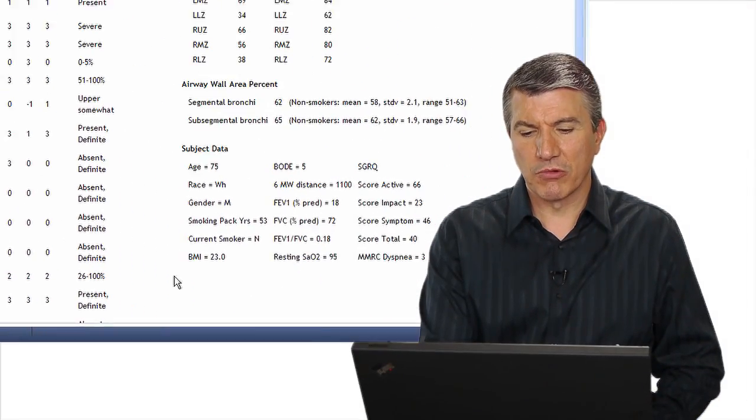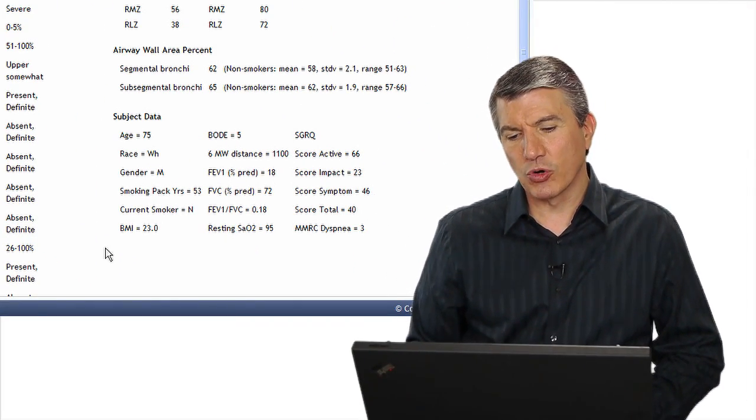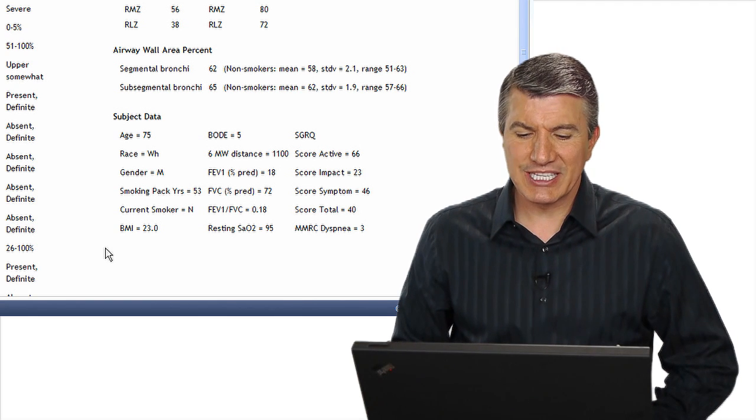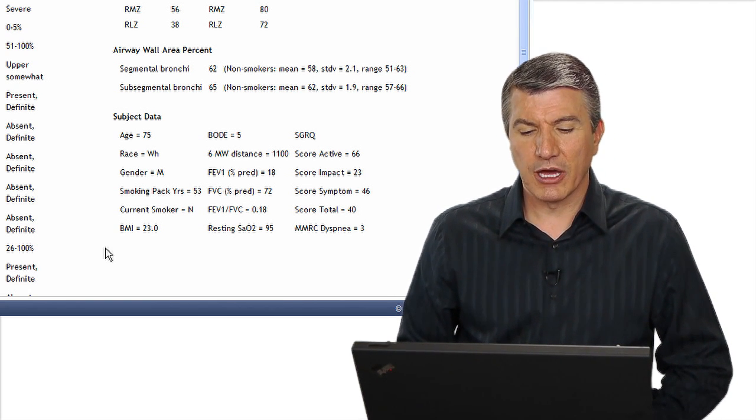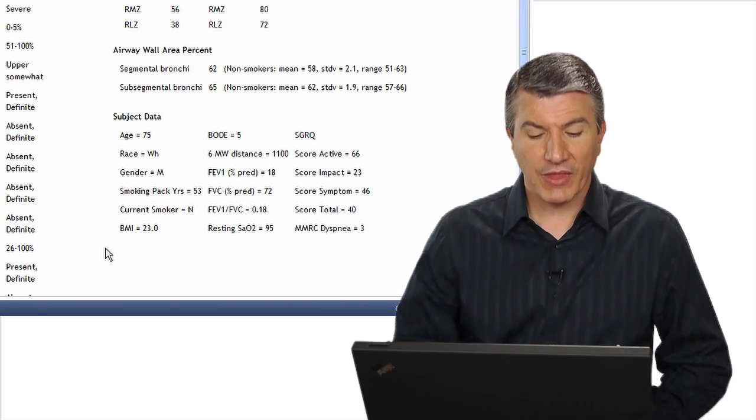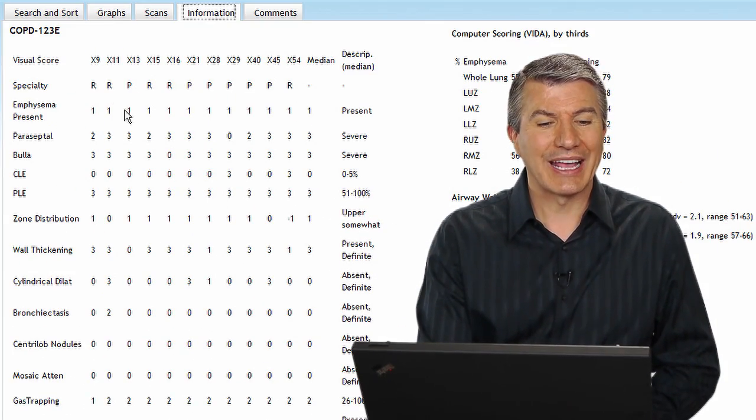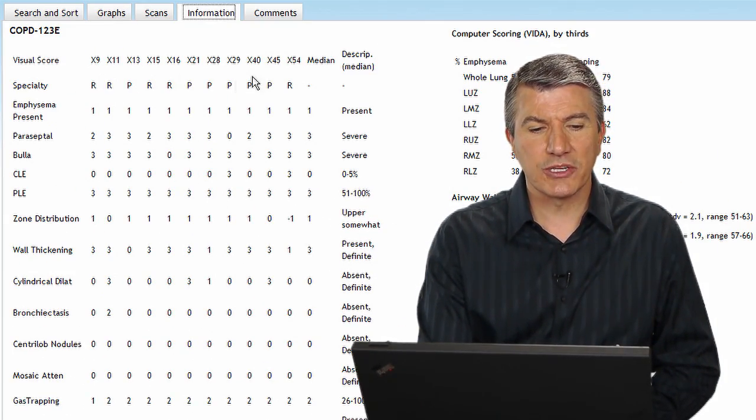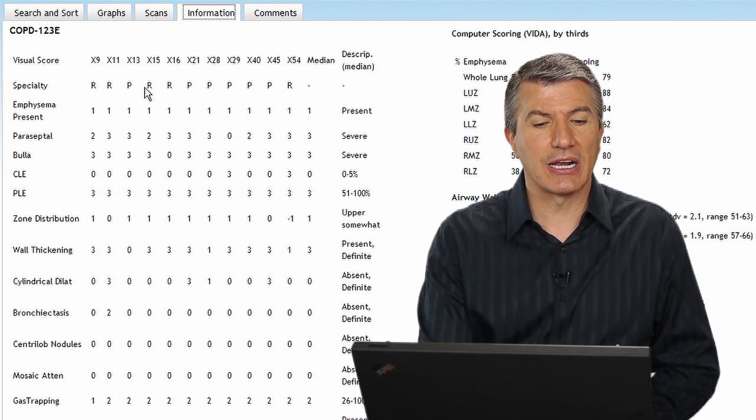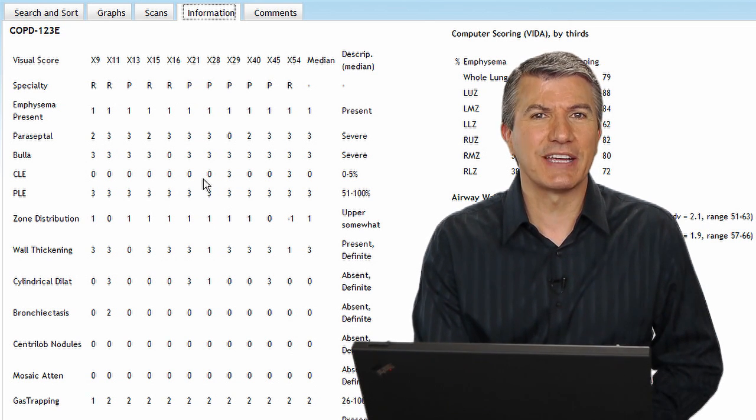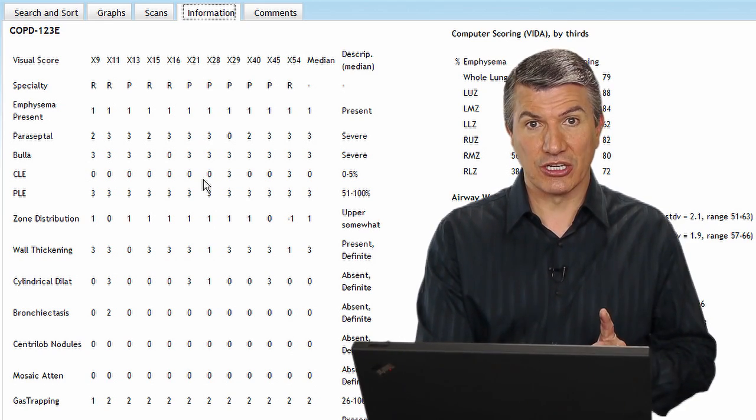I'll look down here in the lower right. I say, hey, this is a 75-year-old white male, 53 smoking pack years. He's not a current smoker, thank goodness, with a BMI of 23. In the upper left-hand corner, I can see that these visual scores were represented by these specialists, radiologists, pulmonologists, radiologists, pulmonologists, etc. These are their visual scores. Well, some of them differ. Why? Let's all take a look.